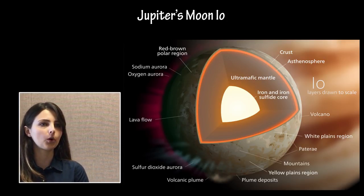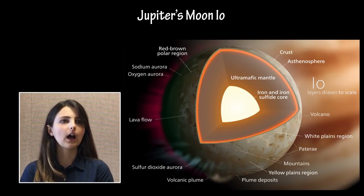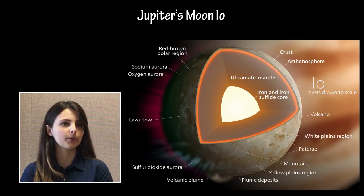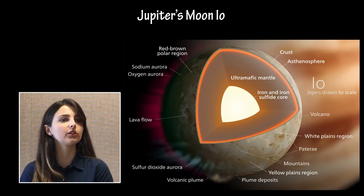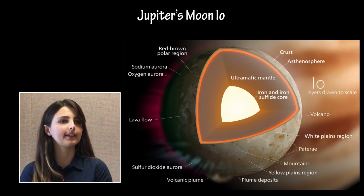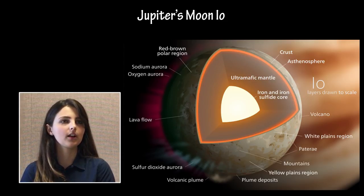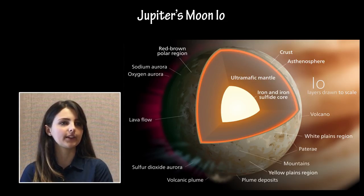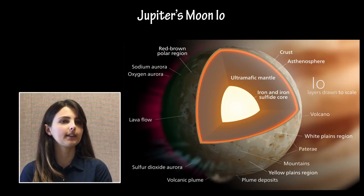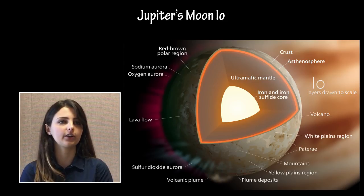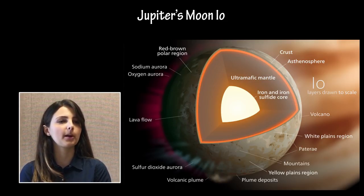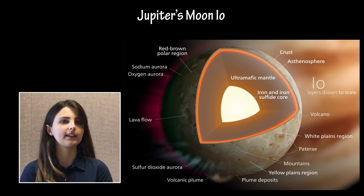Io is the innermost of Jupiter's four large Galilean moons. Io is slightly larger than Earth's moon and has over 400 active volcanoes, making it the most geologically active body in the solar system. Io is tidally locked and has a synchronous orbit around Jupiter. Io's dynamically changing surface shows no impact craters and exhibits regions of many different colors due to the presence of different chemical compounds in its atmosphere, surface, and interior. Io has been imaged primarily by the Pioneer, Voyager, and Galileo missions.